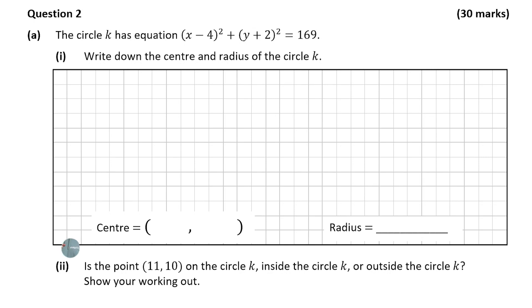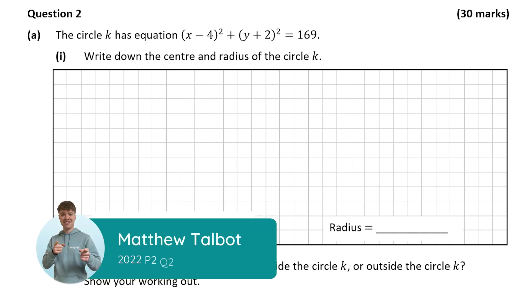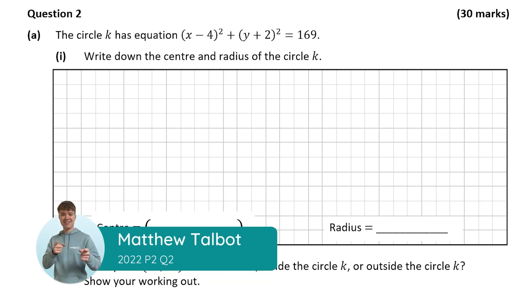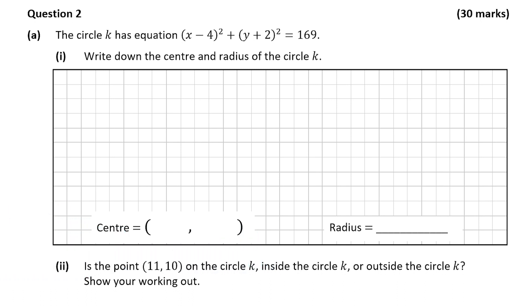Hello, it's Matthew here and we're looking at question 2 which is worth 30 marks. Part a gives us the equation for circle k and we're asked to write down the centre and radius of the circle.